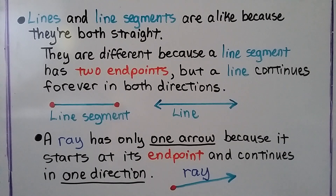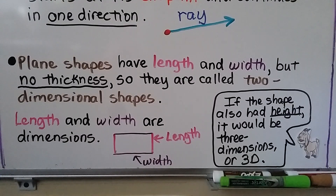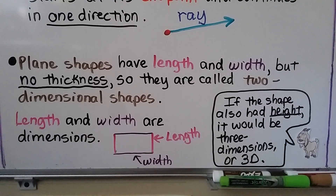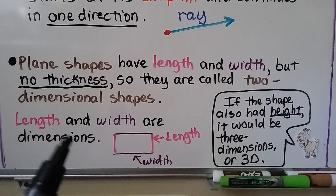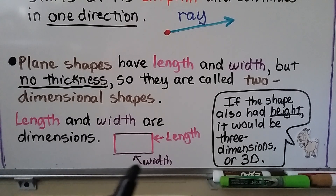Plane shapes have length and width, but no thickness, so they're called two-dimensional shapes. We can even say 2D for two-dimensional. Length and width are dimensions — that's the two: the length and width, one, two dimensions.